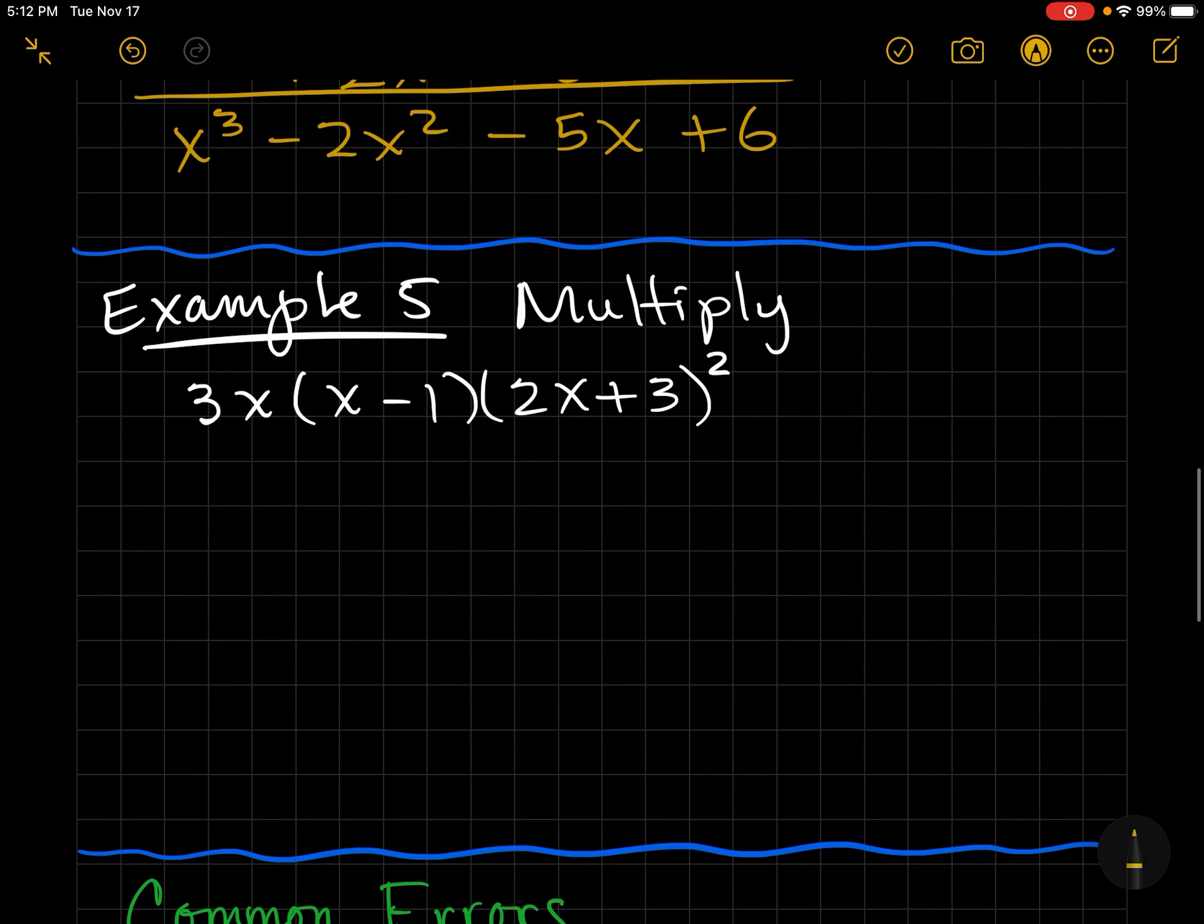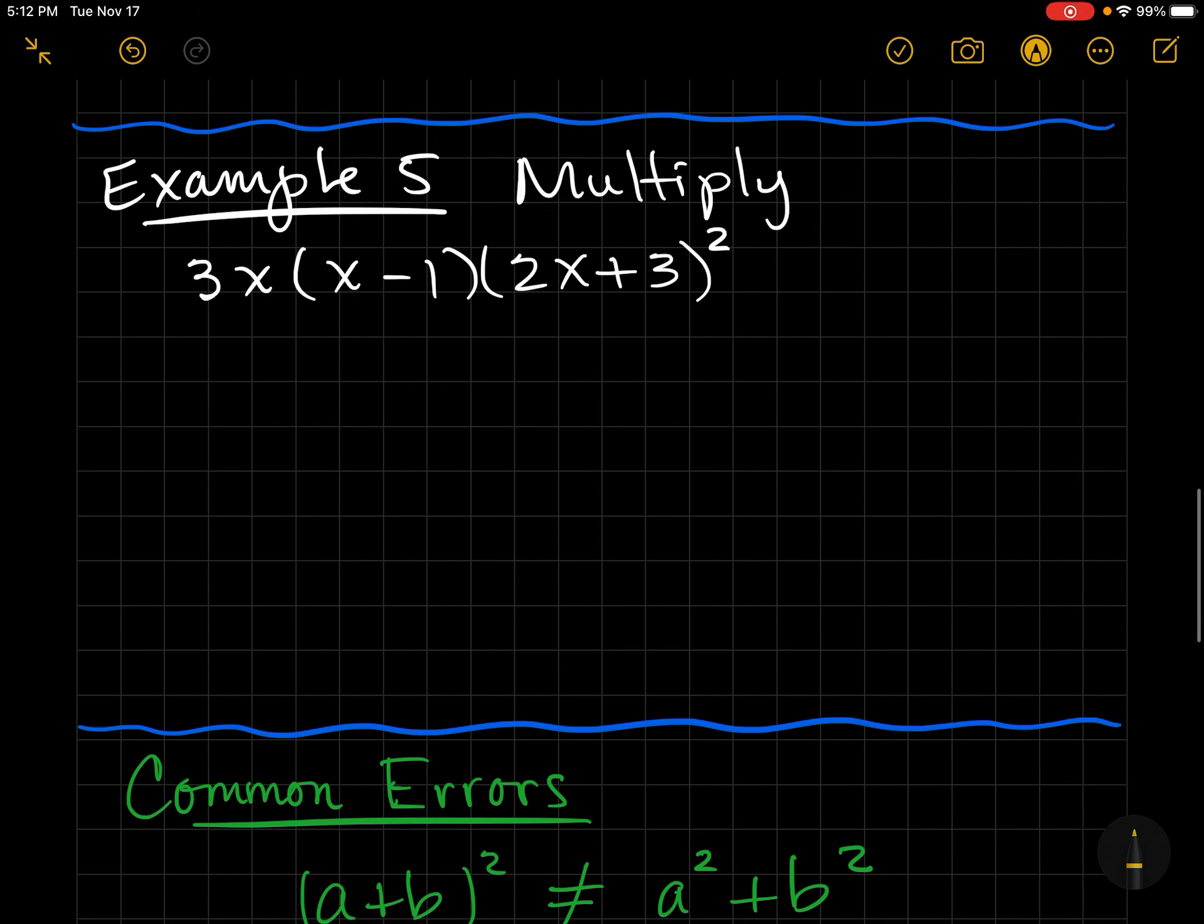For example 5, we're going to multiply. Notice the last one is squared. So whenever it's squared, that's saying that we're going to do it twice. Okay, so I'm just going to write it twice and scratch out that square.